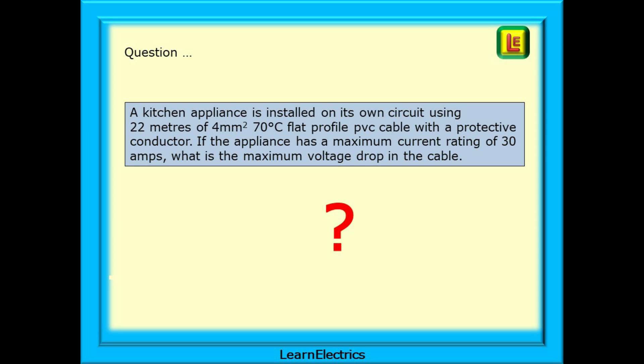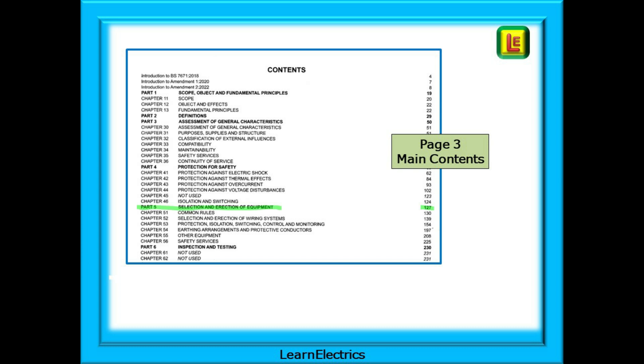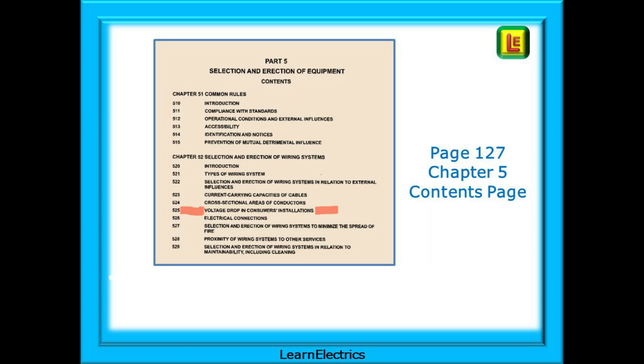Let's follow this in a logical sequence using a method that always works. My go to page is always page 3 the main contents page. This is what it is there for and it makes answering exam questions a lot less stressful. We're going to be selecting and erecting cables so here we've highlighted part 5 selection and erection of equipment which includes wiring systems. It tells us to go to page 127. On page 127 is the contents page for part 5 and in chapter 52 selection and erection of wiring systems we have section 525 voltage drop in consumer installations. Let's find that section now.